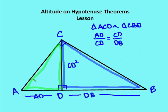The last formula comes from the smaller triangle being similar to the medium-sized triangle: ACD is similar to CBD. Taking AD (leg of the smaller) over CD (leg of the medium) equals CD (leg of the smaller) over DB (leg of the medium). By cross multiplication, CD squared is equal to AD times DB.